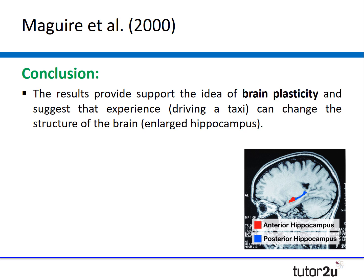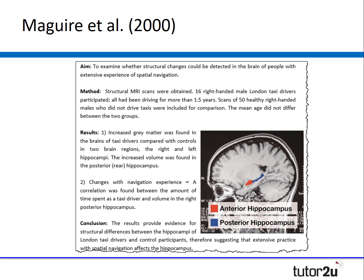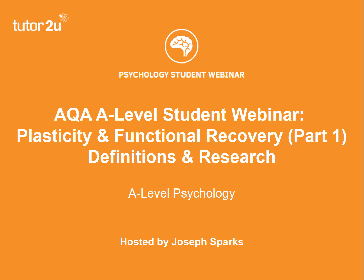This provides support for the idea of brain plasticity and suggests that experience — in this case driving a taxi — can actually change the structure of the brain, which in this case was an enlarged hippocampus. The summary on screen is only 150 words long but contains all of the important elements. It's important when revising and summarising research to retain as many key details as possible while writing concisely. In this video we've looked at the key definitions for plasticity and functional recovery and provided some interesting examples and research. Thank you.